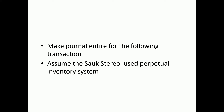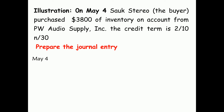Make journal entry 9-3 for the following transaction and assume Stereo used a perpetual inventory system. On May 4, Stereo Piano purchased $3,800 of inventory on account from PW Audio Supplies.